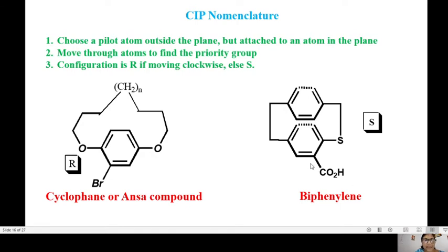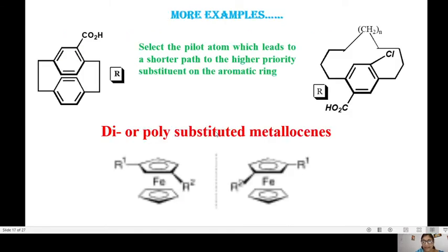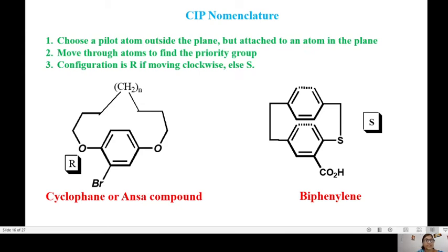Let us see how to give the CIP nomenclature for this. The way you give CIP notation for planar molecules will be different from axial. In case of planar chirality, you choose a pilot atom outside the plane but attached to an atom in the plane. Second, we move through the atoms to find the priority group. If the configuration is clockwise you give it as R, otherwise S.